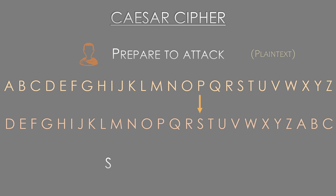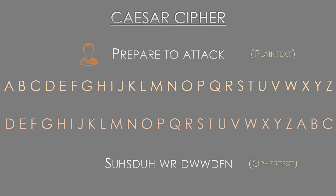So P becomes S, R becomes U, E becomes H, and so on — each time we're shifting by three letters. The result is a jumbled-up, unreadable sentence. This is called the cipher text. Once the general receives his encrypted message, he will need to decrypt it. This is a simple case of reversing the process. But for this to work, the general needs to know how many letters to shift by. If he were to shift by anything other than three, he won't be able to decode the original message. So for us, the number three is our encryption key. We use this number to encrypt the message, and we use it again to decrypt the message. If we want, we can use some other number as our key — this is like our password. It's critical that it is kept secret, because anyone who has this key or password can decrypt our messages.